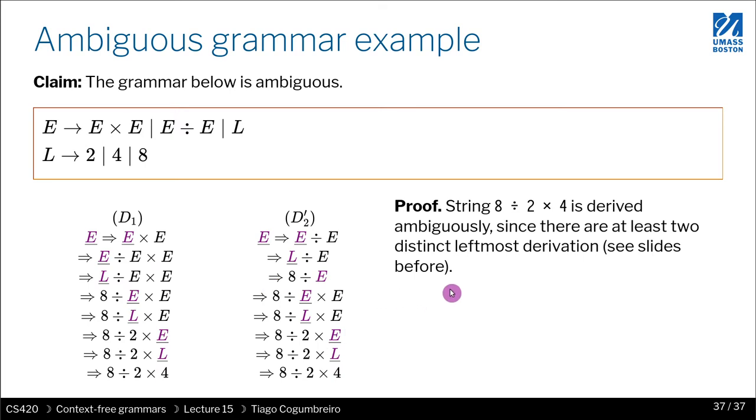And they are ambiguous, as we were mentioning before. So this is the formal notion of ambiguity, which is very important to understand: what is leftmost derivation and that in some cases, for some grammars, you can have two different distinct leftmost derivations.